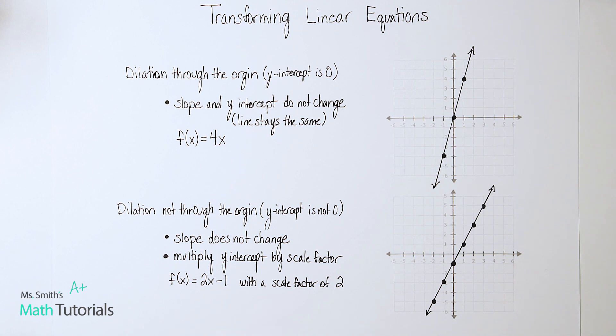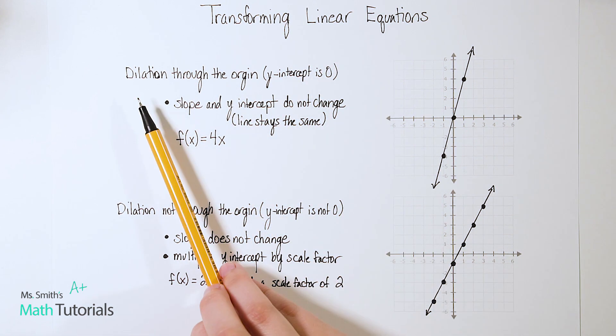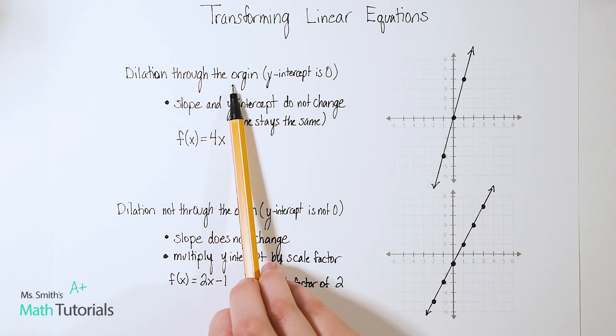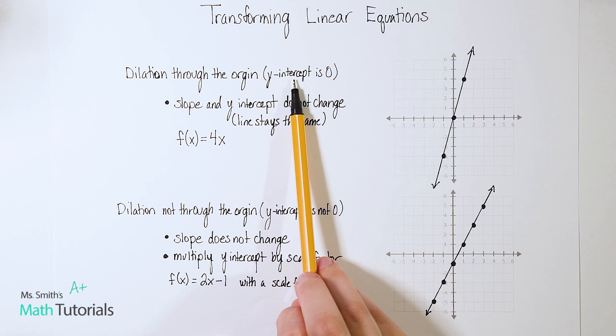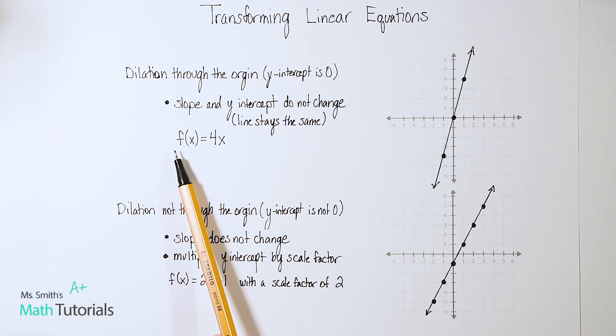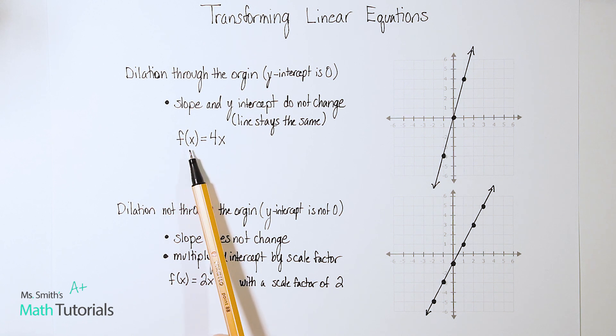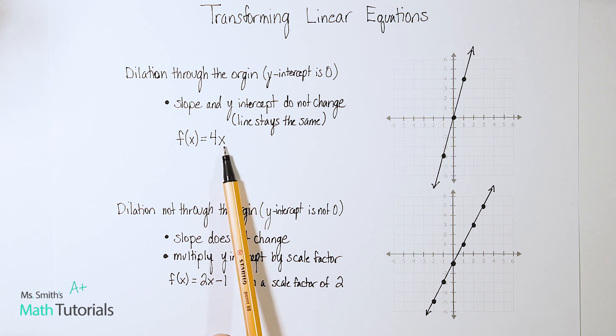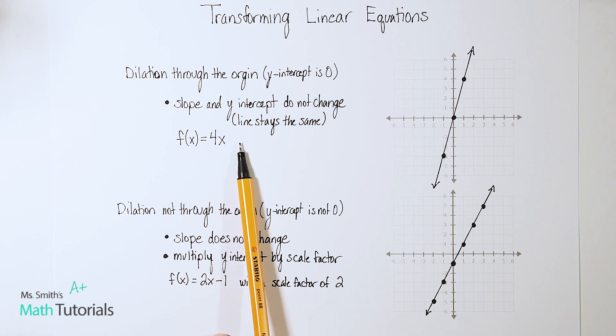The first one that you may be asked to do for a linear equation would be a dilation through the origin. And what I mean through the origin is the y-intercept is zero. And here's a visual example of it. So notice how our y-intercept is zero right at the origin. So in order for this first rule to apply, the y-intercept would have to be zero. And the way that would look in an equation, here's an example: f of x, and f of x of course just means y. Y equals 4 times x, right? 4 would be our slope. And then there's an understood plus zero right here, which represents the y-intercept being zero.